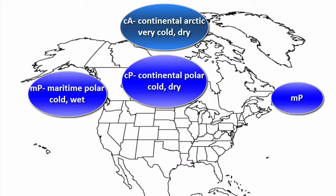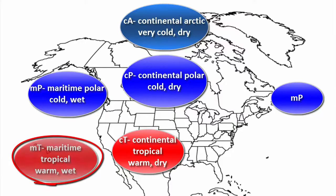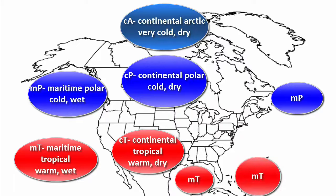Now we're getting into our warmer air masses. Over the southern United States draw another oval and label it CT — continental tropical — which is warm and dry. Continental means it's forming over land so it's dry, but now it's farther south so it's warmer. Maritime tropical forms over the ocean — lowercase m, uppercase T — giving us a warm and wet air mass. Label the areas over the Gulf of Mexico and the southern Atlantic with MT as well, since there are two oceans.